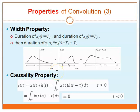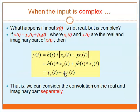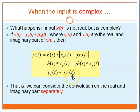And lastly, you have the causality property. Now, what happens if the input S2(t) is not real but complex, where S2(t) equals Sr plus j·Si? Sr is the real part and Si is the imaginary part. You will have Y(t) equal to Yr(t) plus j·Yi(t) — that is, we can consider the convolution on the real and imaginary parts separately.